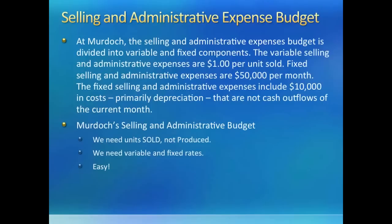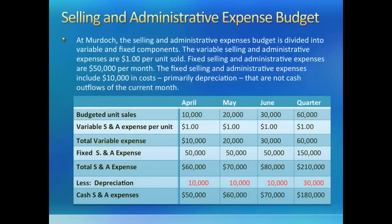Here we have a selling and administrative budget for Murdoch. We started with unit sales and multiply by the rate to get total variable expenses, then add the fixed portion. The budget is fairly easy, with one complication we have seen before — depreciation. Companies incur depreciation expense on the office building but do not have to pay cash for it, so the cash payment for selling and administrative expenses is reduced by the amount of depreciation. You would need all these numbers in the income statement and later in our cash budget.